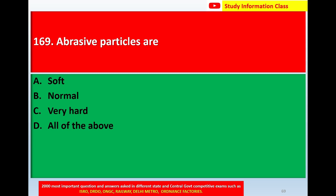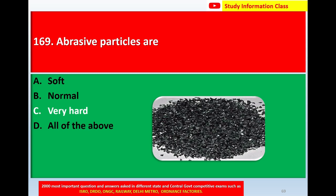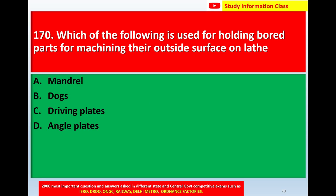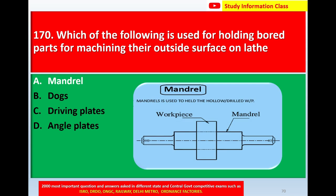Question number 169: Abrasive particles are — option A soft, option B normal, option C very hard, option D all of the above. Correct answer is very hard. Next, question number 170: Which of the following is used for holding bore parts for machining their outside surface on a lathe? Option A mandrel, option B dogs, option C driving plates, option D angle plates. Correct answer is option A, mandrel. The mandrel is used to hold the hollow workpiece. Thank you for watching.